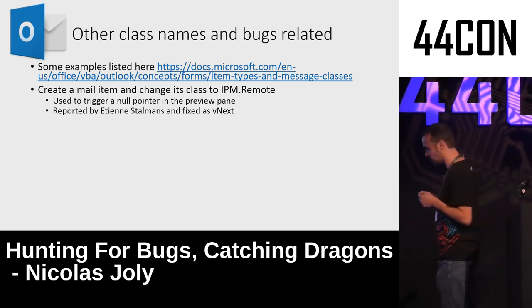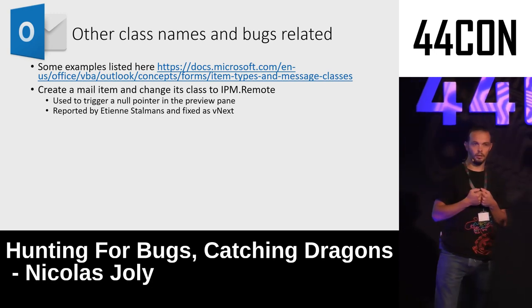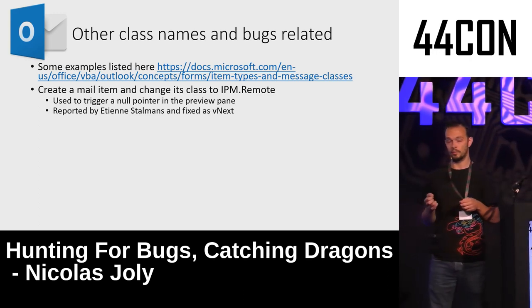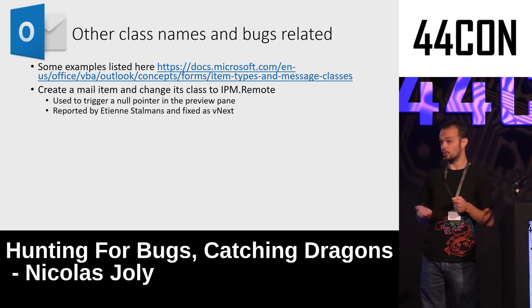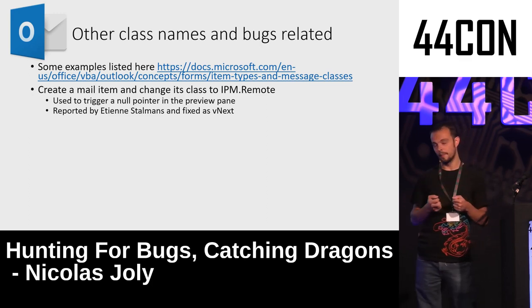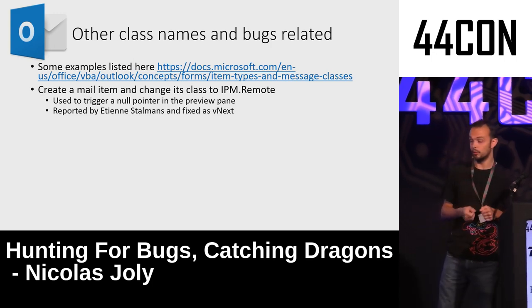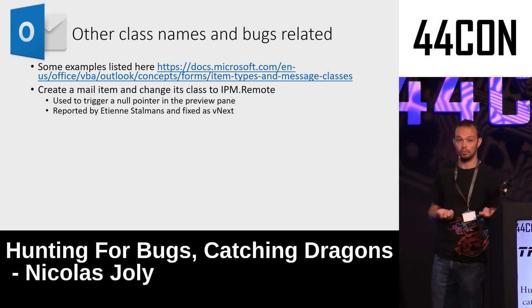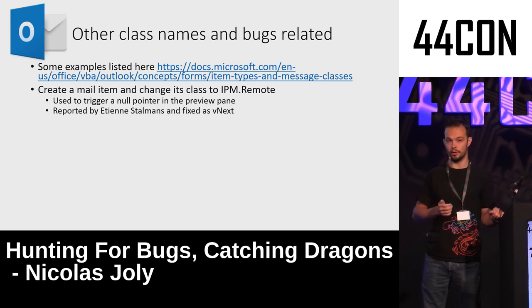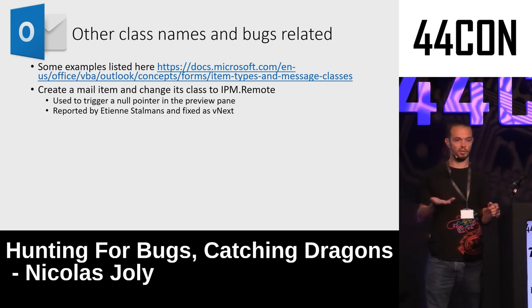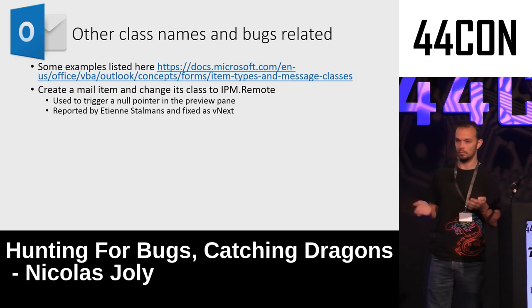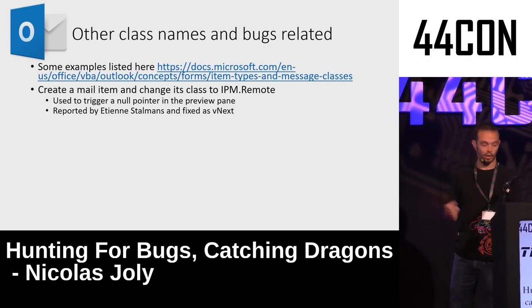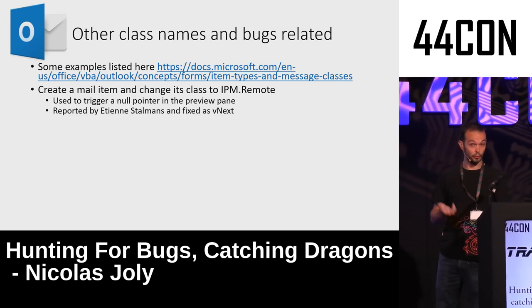Let's talk about issues affecting these message classes. We received one in summer 2016 from Etienne Stallman, who reported an email using the IPM.Remote class that triggered a null pointer in the preview pane. For bugs like this we don't issue a CVE since they don't qualify for the security bar — it's a moderate issue. But it's still interesting because it reveals hidden behaviors, things that shouldn't happen.